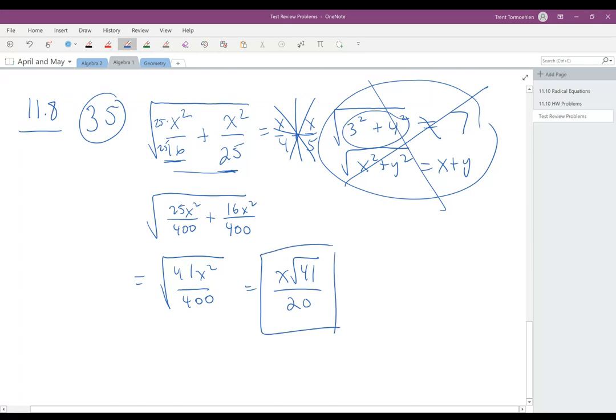If the denominator would have not been a perfect square, you would need to rationalize your denominator. But for now, it is a perfect square. So you're done with x times the square root of 41 all over 20.